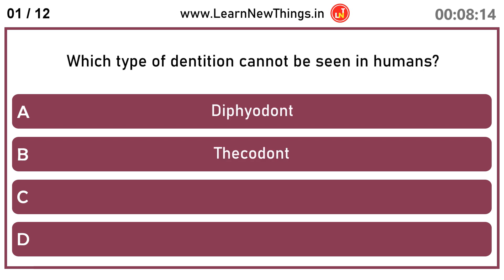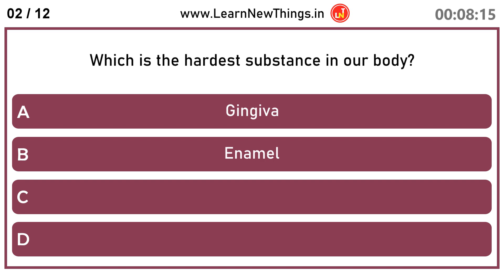Which type of dentition cannot be seen in humans? Acrodent. Which is the hardest substance in our body? Enamel.